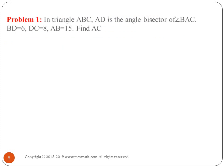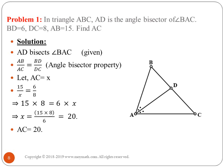Let's solve a problem using this property. In triangle ABC, AD is the angle bisector of angle BAC, where BD = 6, DC = 8, and AB = 15. Find AC. Using the angle bisector property, since AD bisects angle BAC, we can write AB/AC = BD/DC.